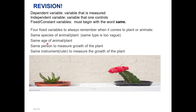When it comes to the plant and the animal, they must also be the same age — these two will always apply to plants and animals. If you're desperate and cannot think of anything, you must have same person to measure the growth of the plant, linked to the experiment — same person to measure the diameter of the pupil, relating it to your experiment. You cannot have a person with shaky hands and a person with steady hands, because the measurements will be different. So if the same person measures the growth of the plant, the experiment is more fair and valid. Then same instrument to measure the growth of the plant — don't just say same instrument, make sure you refer it to your experiment.